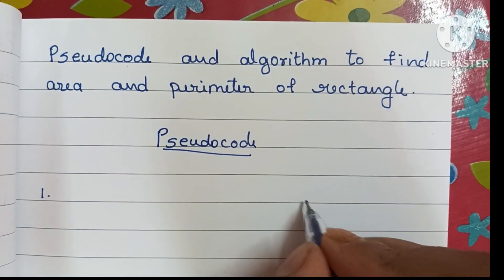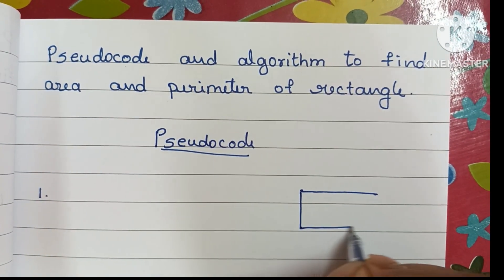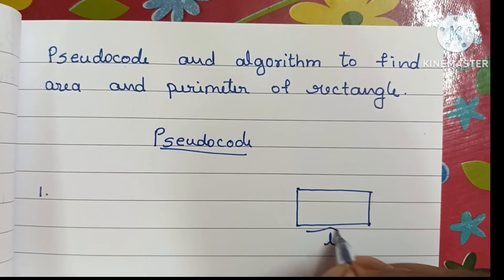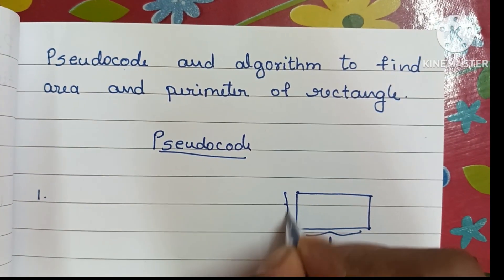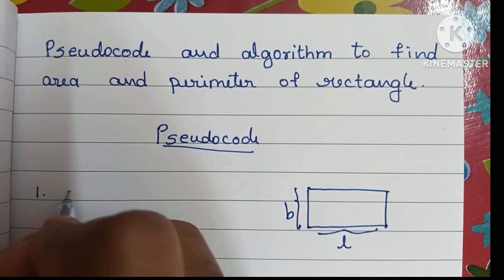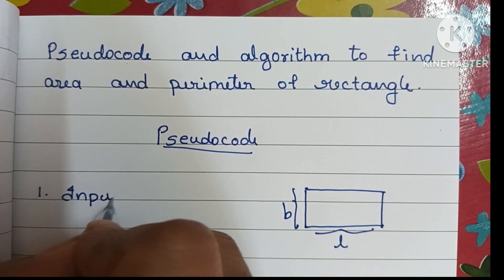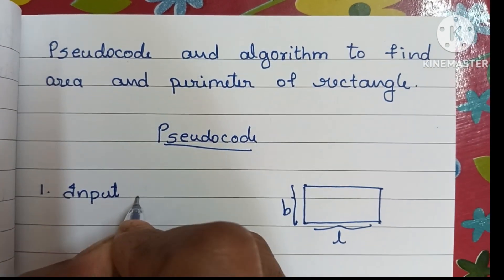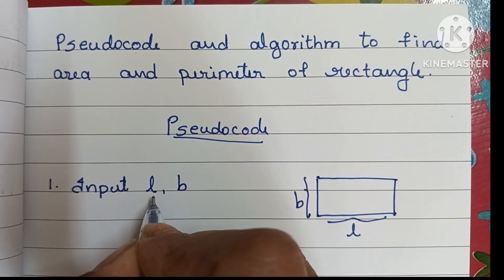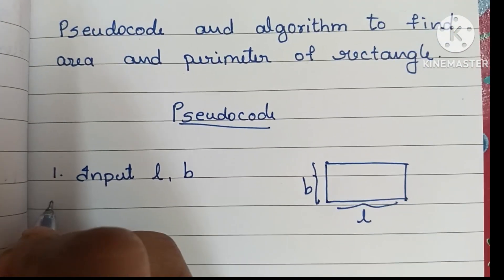To find the area and perimeter of a rectangle, first we have to input two values: length and breadth. Variable L indicates length and variable B indicates breadth.